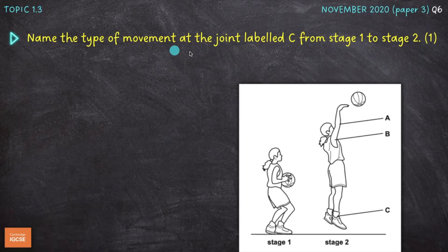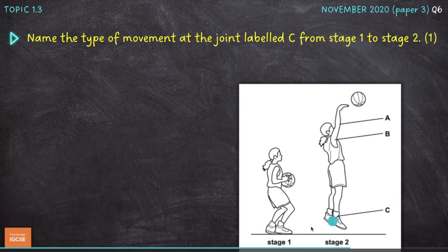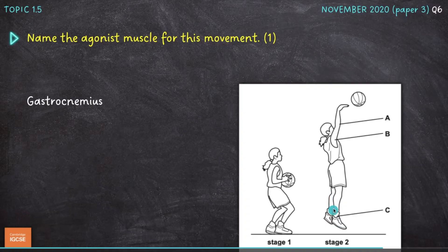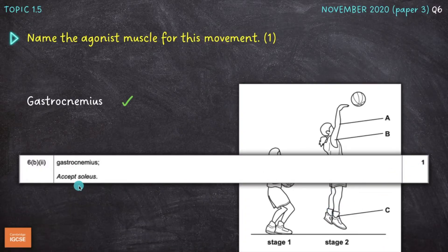Next one is name the type of movement at the joint labelled C from stage 1 to stage 2. So we're looking at the ankle joint here, and as you can see they're pushing off from the ground to jump at the point of shooting. So we have plantar flexion, or the pointing down of the toes away from the leg. So that's plantar flexion there for one mark. And then name the agonist muscle for this movement. So which is the muscle doing the work? Which is the prime mover for plantar flexion at the ankle joint? And that one is the gastrocnemius, or the calf muscle on the back of the lower leg. But we could have also gone for the soleus, which combines with the gastrocnemius to create plantar flexion there.